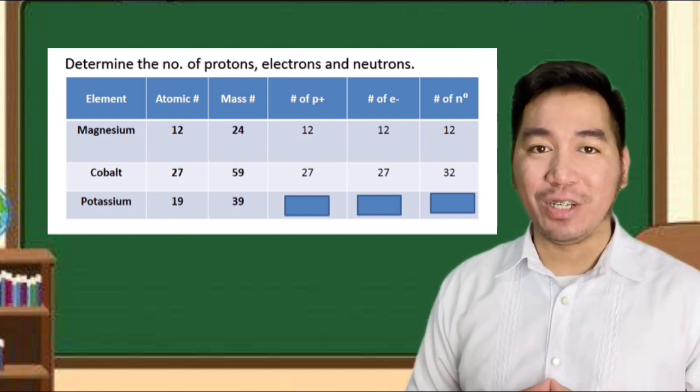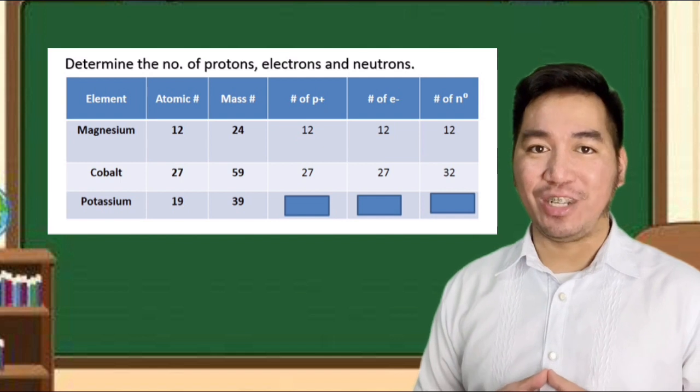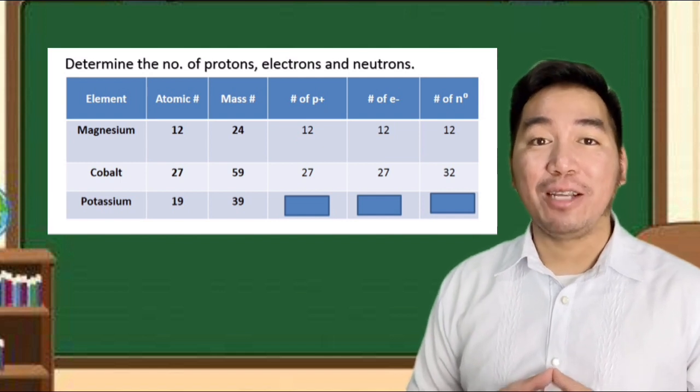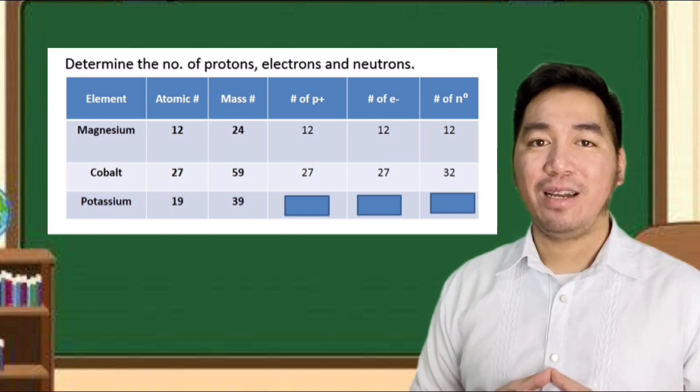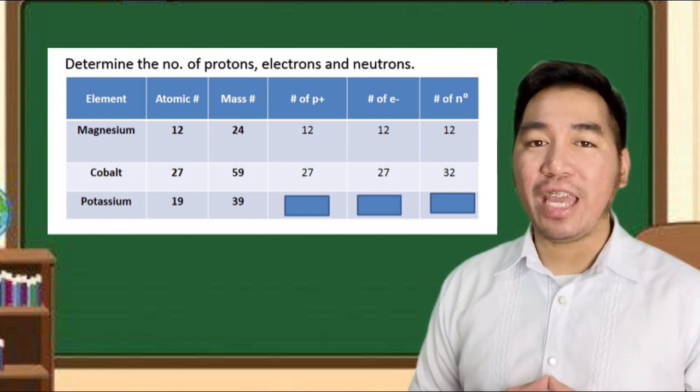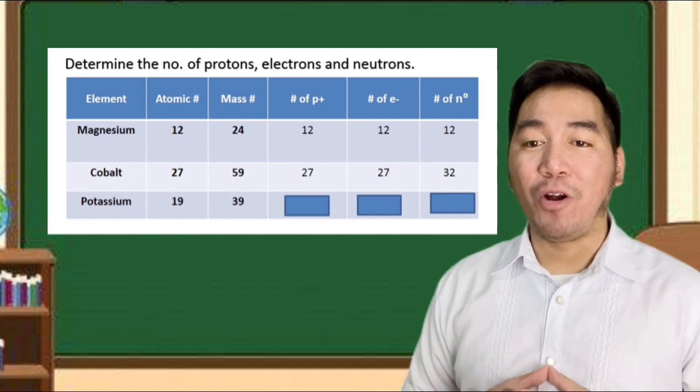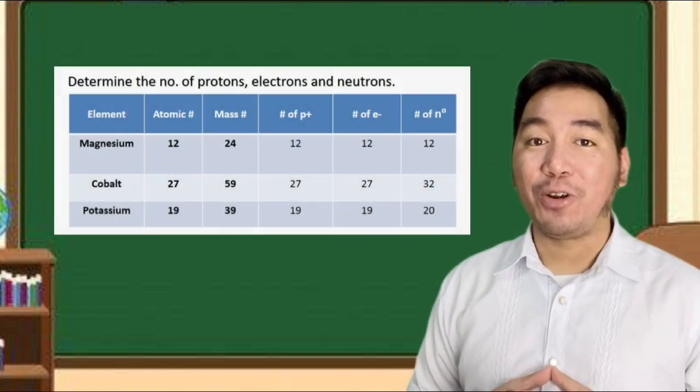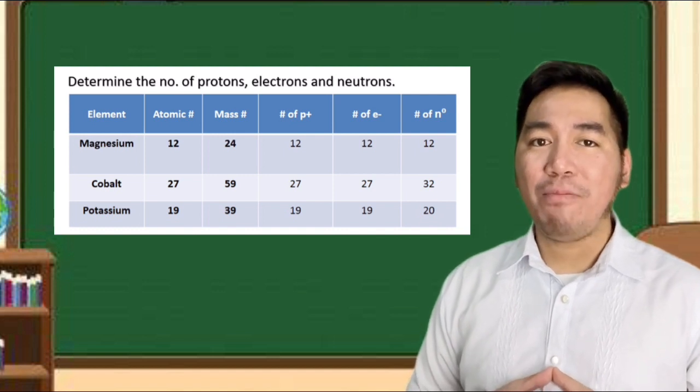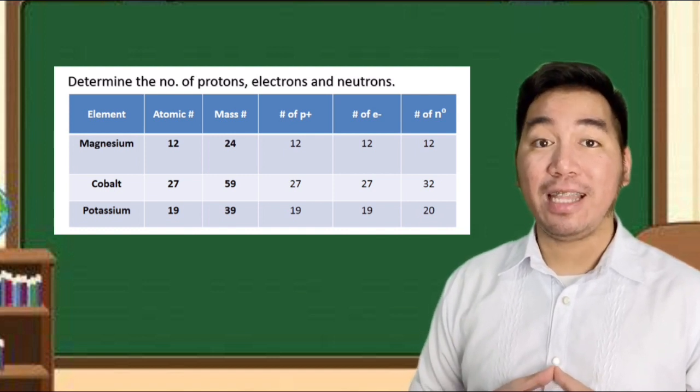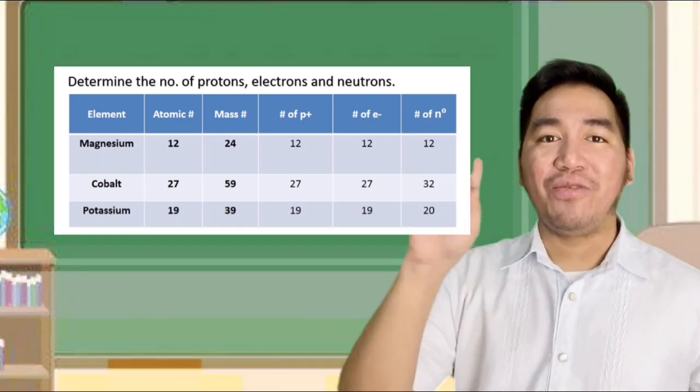Potassium has an atomic number of 19 and atomic mass of 39. Determine the number of protons, electrons, and neutrons. Again, you can pause the video for you to think your answer. Now, what do you think the answer? The number of protons is 19. And the number of electrons is also 19. What about the number of neutrons? It is 20. Very good!